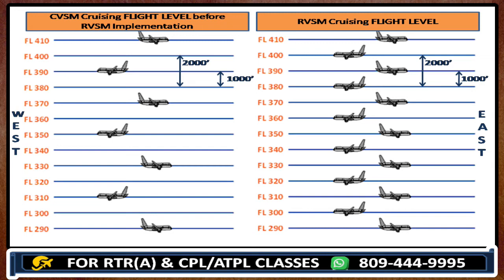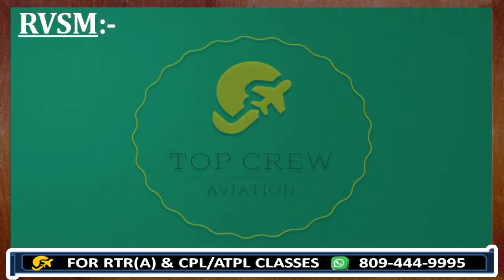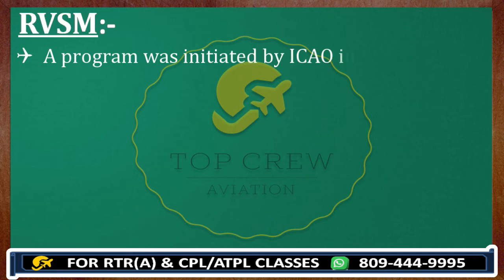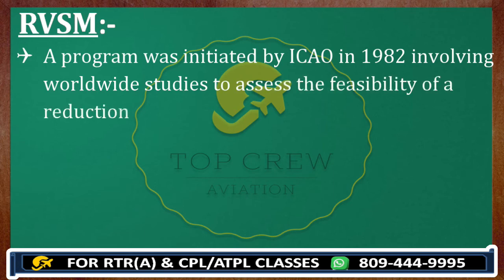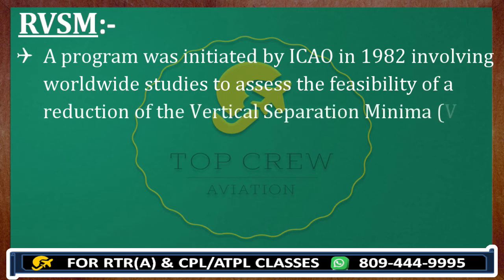Whenever aircraft A is coming from the east and aircraft B is coming from the west, we give a separation of 1000 feet in RVSM. In case both A and B are coming from the east, the separation would be double — that would be 2000 feet. I hope you understand with the help of the picture on screen, which is explaining how RVSM and CVSM assign flight levels. A program was initiated by ICAO in 1982 involving worldwide studies to assess the feasibility of a reduction of vertical separation minimum above Flight Level 290 from 2000 feet to 1000 feet.